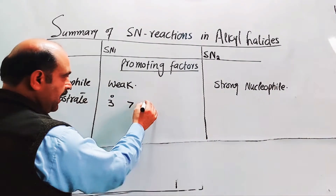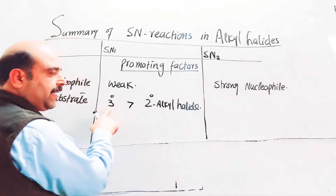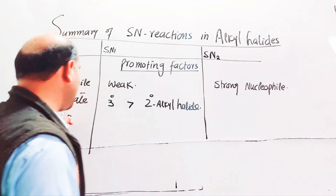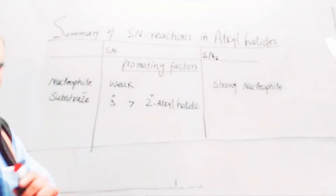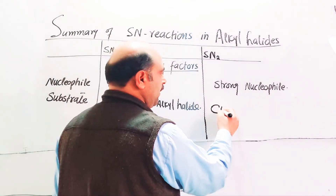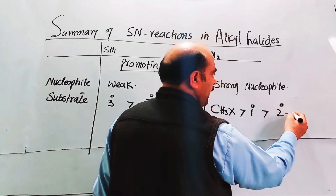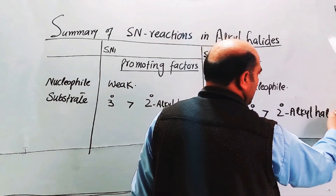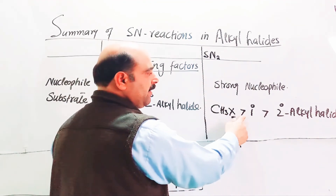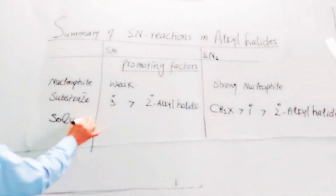For the substrate in SN1: tertiary alkyl halide promotes SN1, then secondary alkyl halide. For SN2, the substrate promoting factor is methyl halide first, then primary alkyl halide, which is faster than secondary alkyl halide.